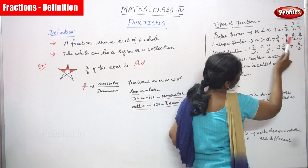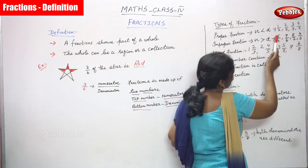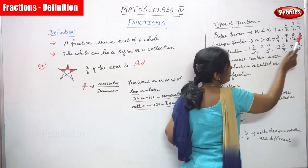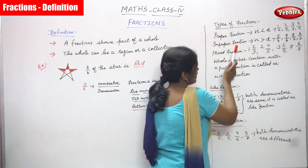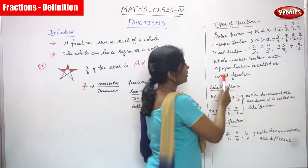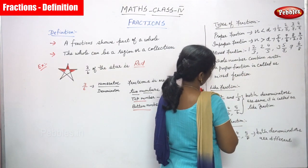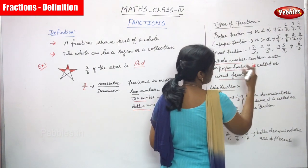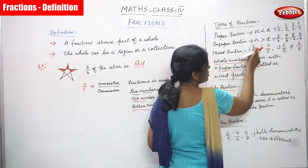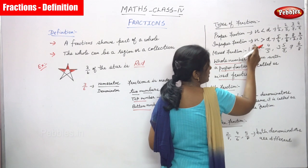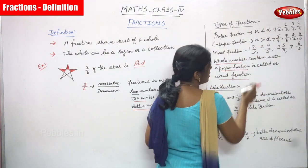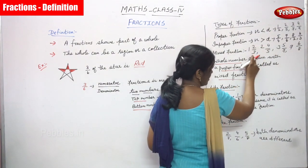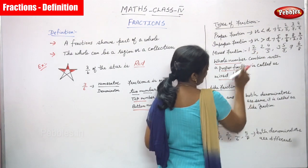Continuing improper fraction examples: 8 by 2 — 8 is greater than 2; 4 by 3 — 4 is greater than 3. All the numerators are greater than the denominator — that is called an improper fraction. Mixed fraction: a whole number combined with a proper fraction is called a mixed fraction. For example, 1 and 2 by 3 — where 1 is a whole number and 2 by 3 is a proper fraction because 2 is less than 3.